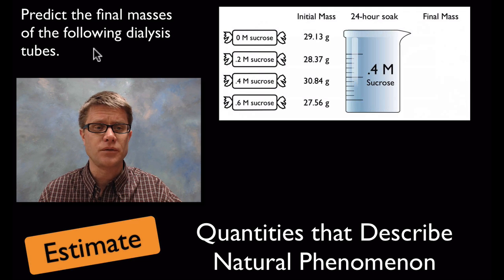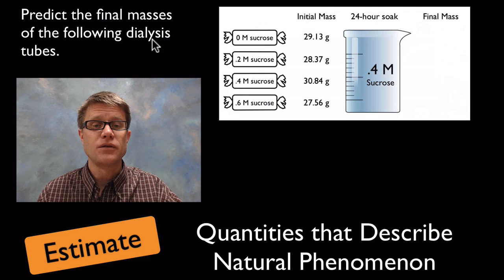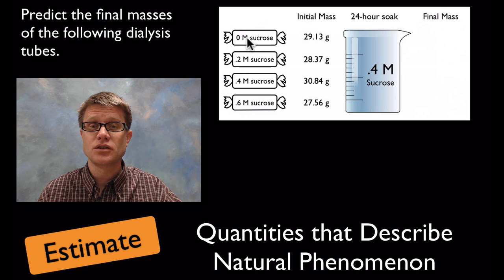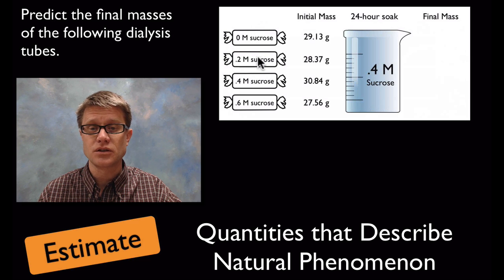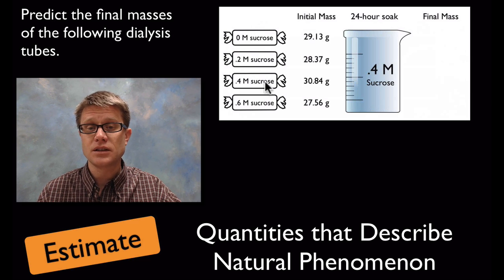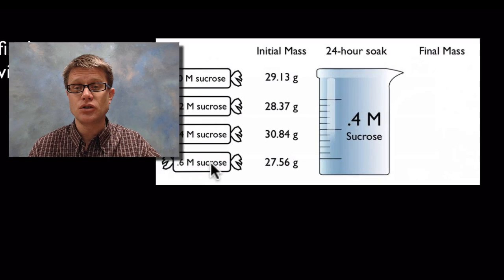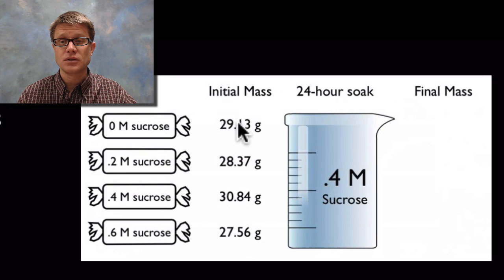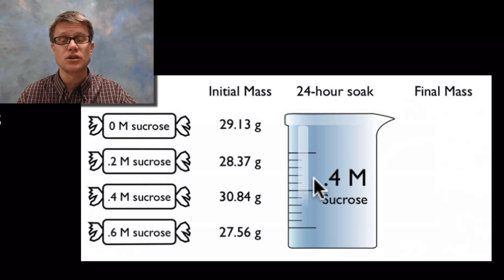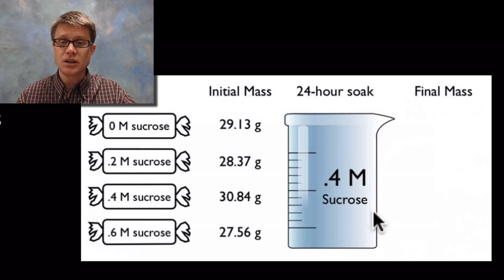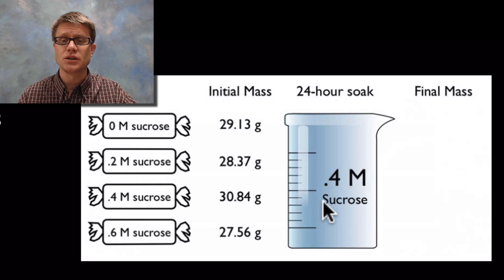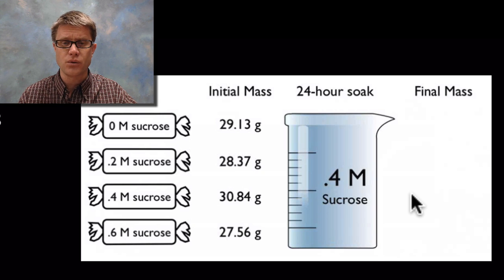They want you to be able to estimate quantities that describe natural phenomena. This is a question I came up with. Predict the final masses of the following dialysis tubes. We've got different concentrations, sucrose concentrations inside this dialysis tubing. They've given you the mass of each of those. We're going to put it in a concentration of 0.4 molar sucrose and they want you to predict the mass at the end. The easiest one would be to start with 0.4 and 0.4.